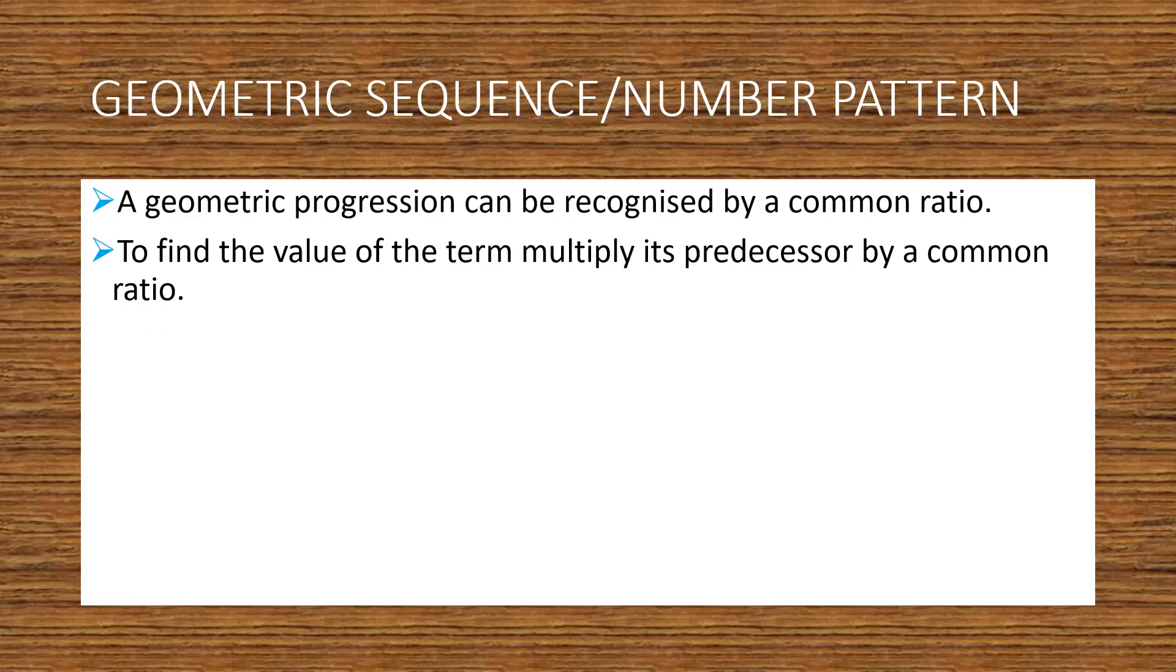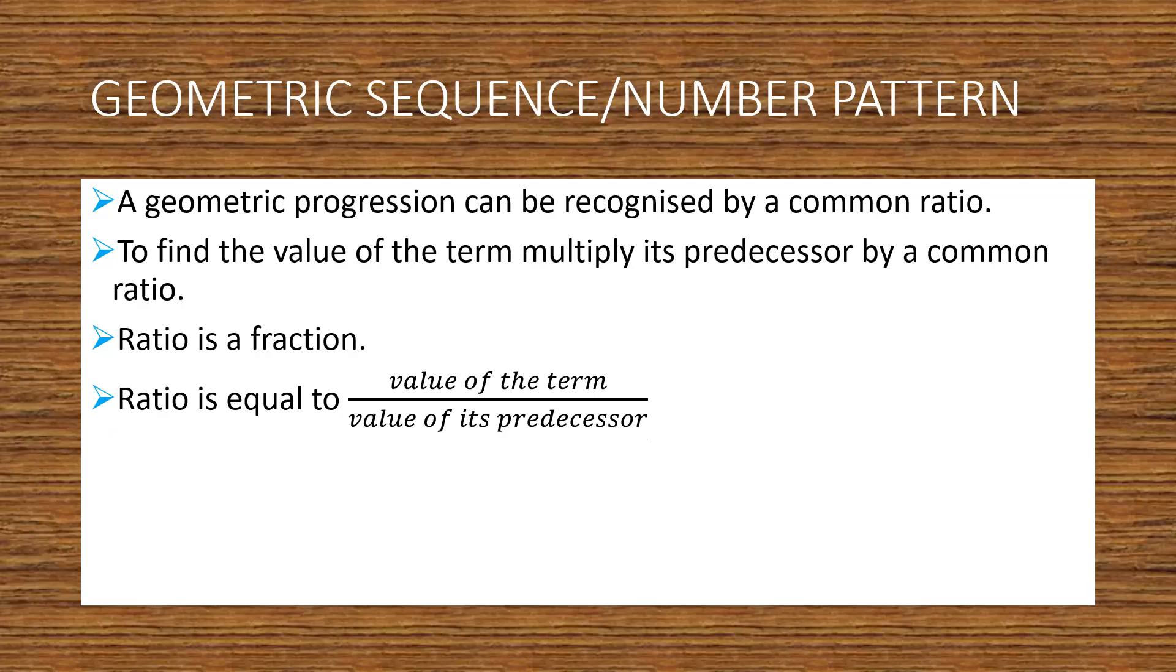To find the value of the term, multiply its predecessor by a common ratio. So basically to find the value of the next term, you just have to multiply it by the common ratio. And what is a ratio? A ratio is a fraction, and the ratio will always be equal to the value of the term divided by the value of the previous term, which is its predecessor.